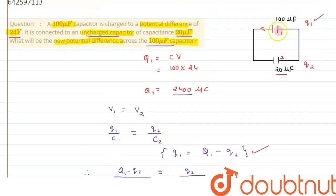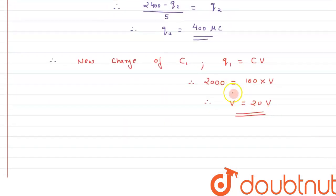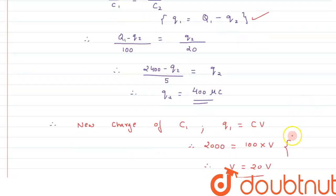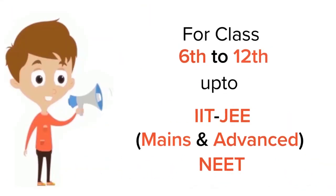So the new potential difference developed across the 100 microfarad capacitor after equilibrium — when the potentials become equal — is 20 volts. We used the key equation Q1 = Q_total minus Q2. I hope you have understood the concept, thank you for watching.